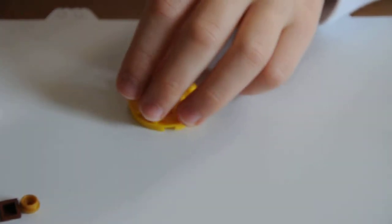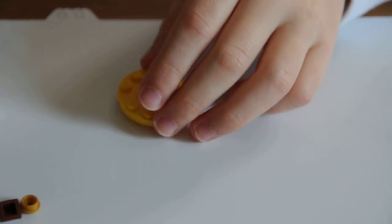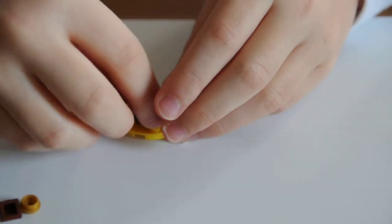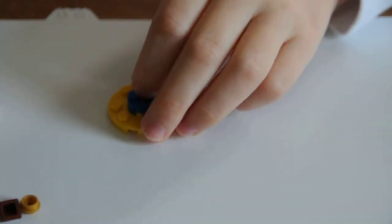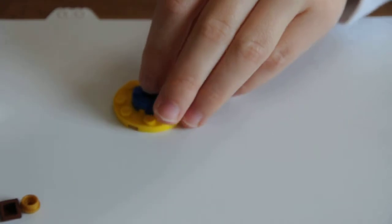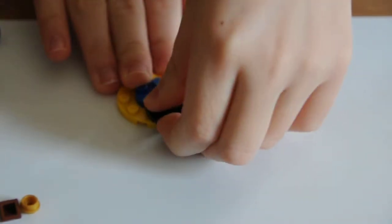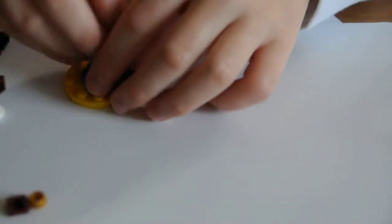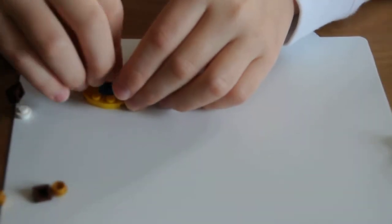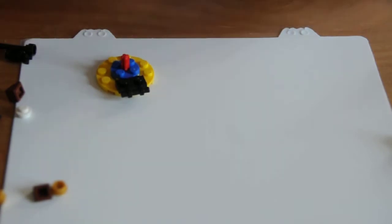So next, it says to get this blue piece and to put it right on top here. That's easy. Then it says to get this piece right here and to put it on. Now I'm looking for the piece of what it says next to put. Oh, here it is.